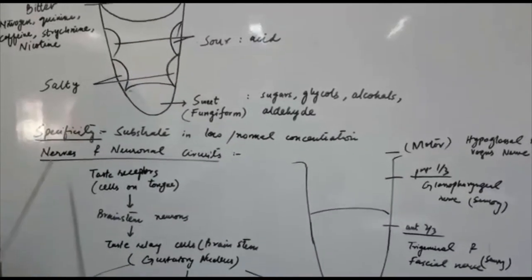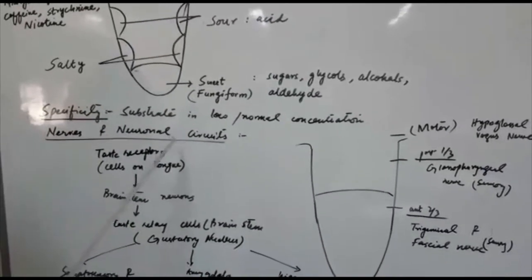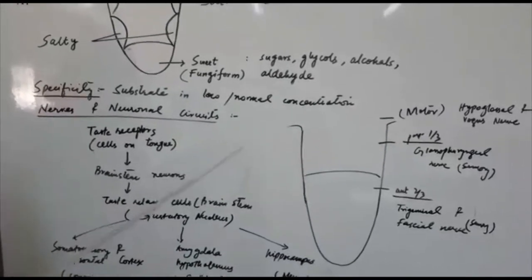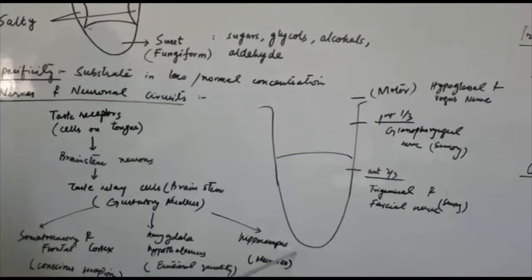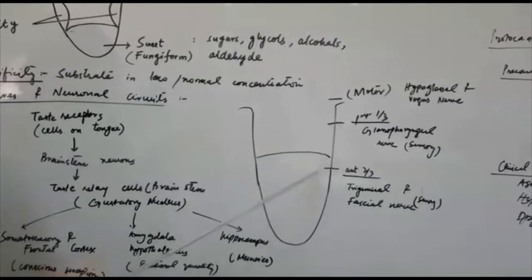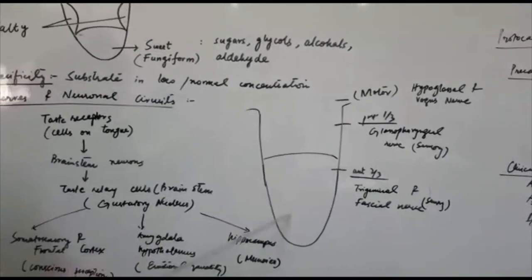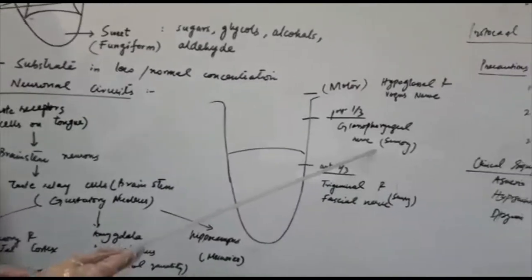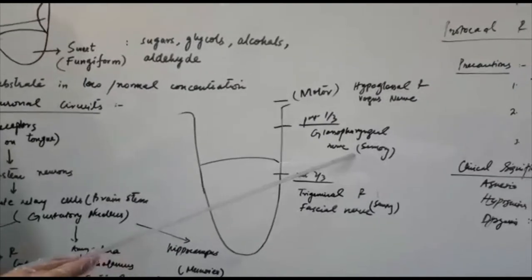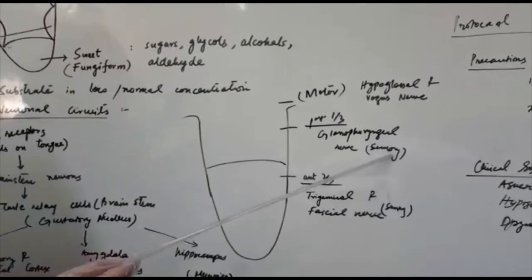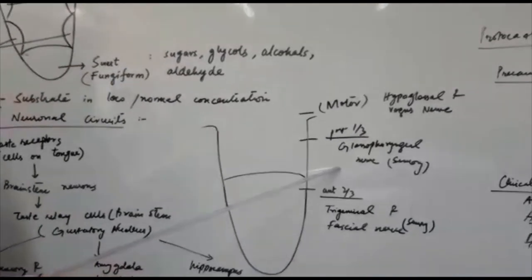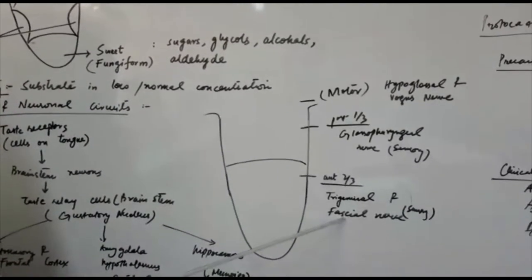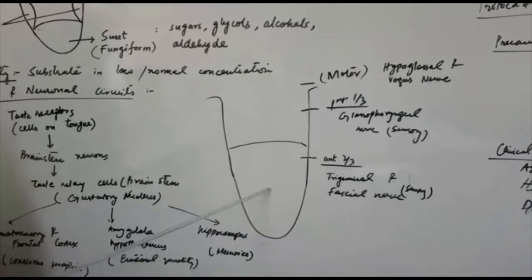Next we will see what are the nerves and neuronal circuits that take part in the process of taste sensation. This is a tongue shown and this is anterior two-third part and this is posterior one-third part. When we discuss the sensory part of the sensation, the sensory gustation is conveyed by trigeminal nerve and facial nerve in the anterior two-third part.